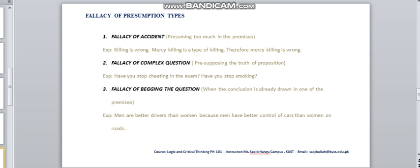The second one is Fallacy of Complex Question. In this fallacy, a person presupposes the truth of proposition. For example, have you stopped cheating in the exam? Have you stopped smoking? In such cases, even when you are not cheating in the exam, when a person asks have you stopped cheating in the exam, it means that you have cheated sometimes in the exam, despite the fact that you have never cheated in the examination.